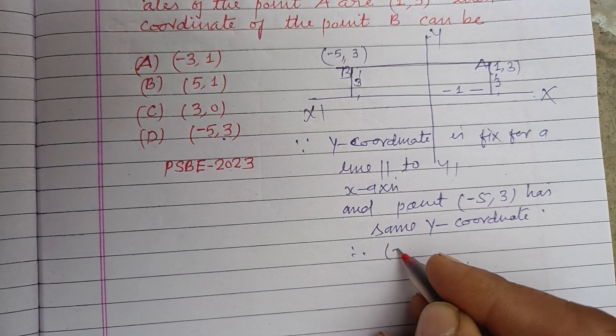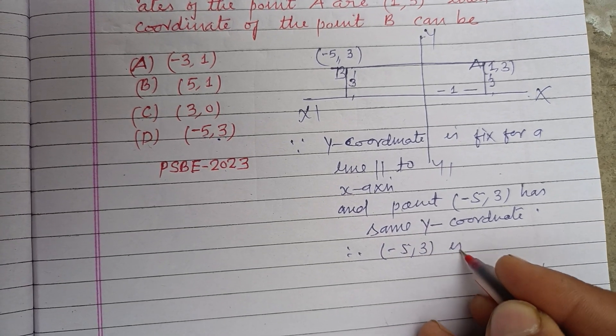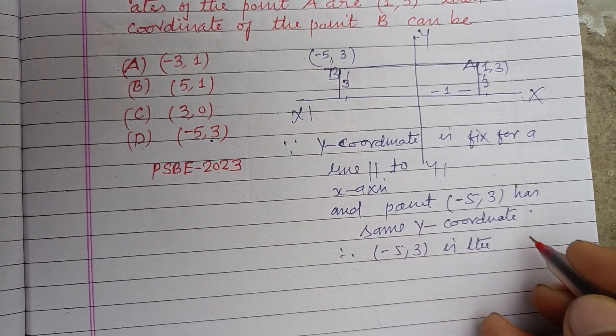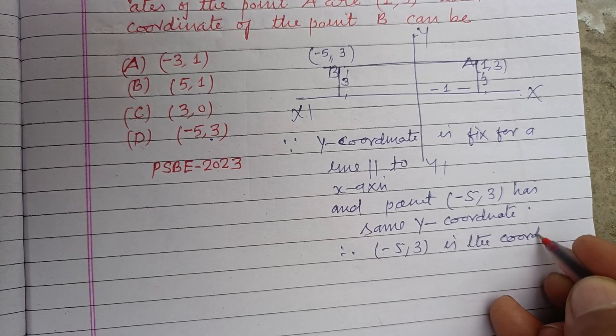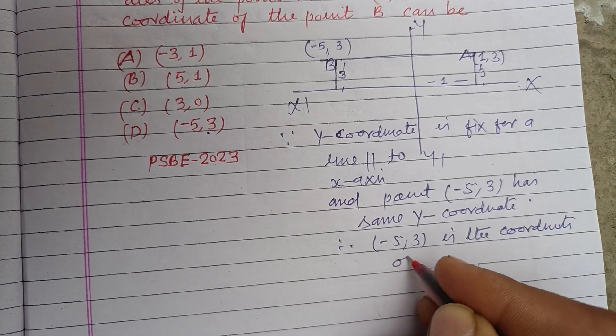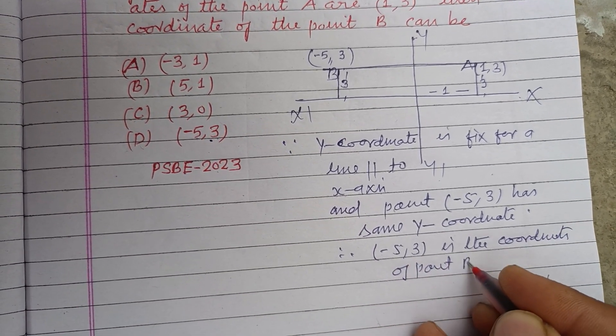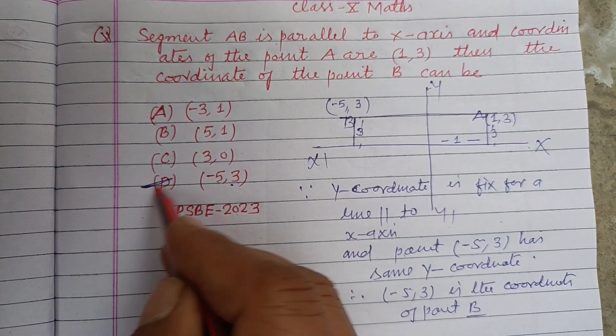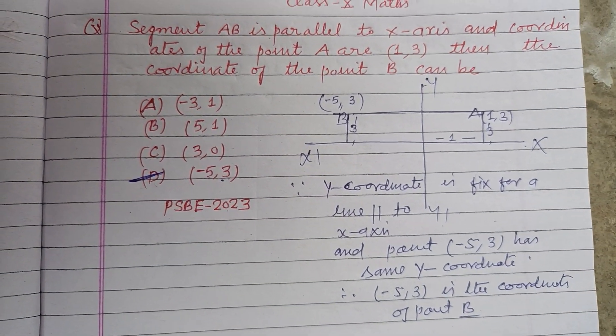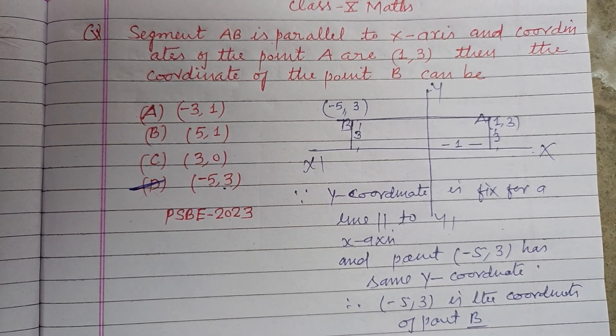So (-5, 3) is the coordinate of point B. This is the correct answer. I hope you got it. Please like the video, subscribe to the channel, thanks folks!